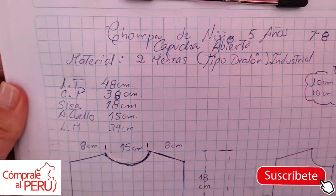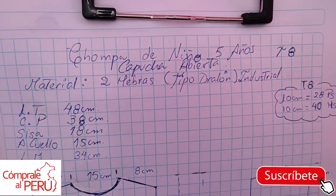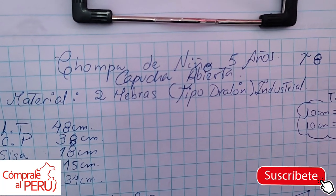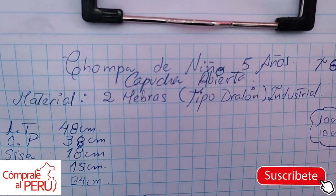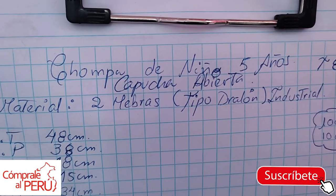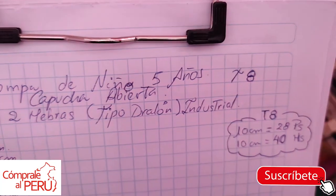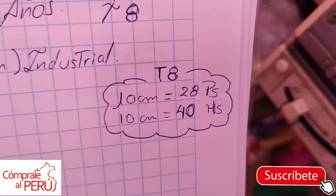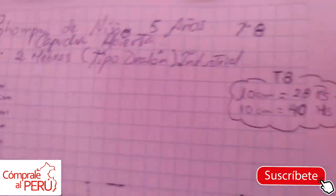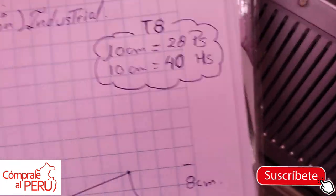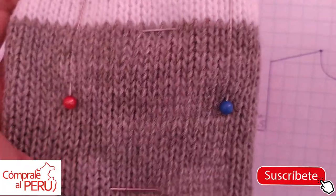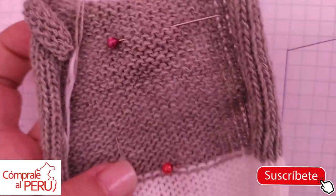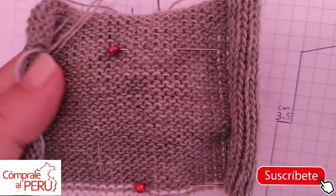Hello, how are you? I hope you are very well. Today I'm going to show you how to make a jacket for a 5-year-old child. This child's jacket is going to have a hood, open-front style. I will do it at tension 8. I already showed you how to make a 5x5 gauge swatch. This is the color — it is a cement green.